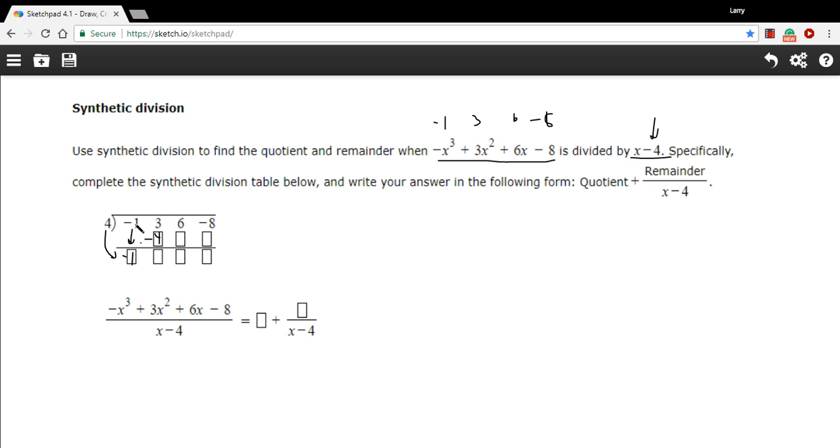Then you add, and really we were adding here, it's just that there was nothing to add it to. So 3 plus a negative 4 is negative 1. Then we multiply again, 4 times negative 1 is negative 4.